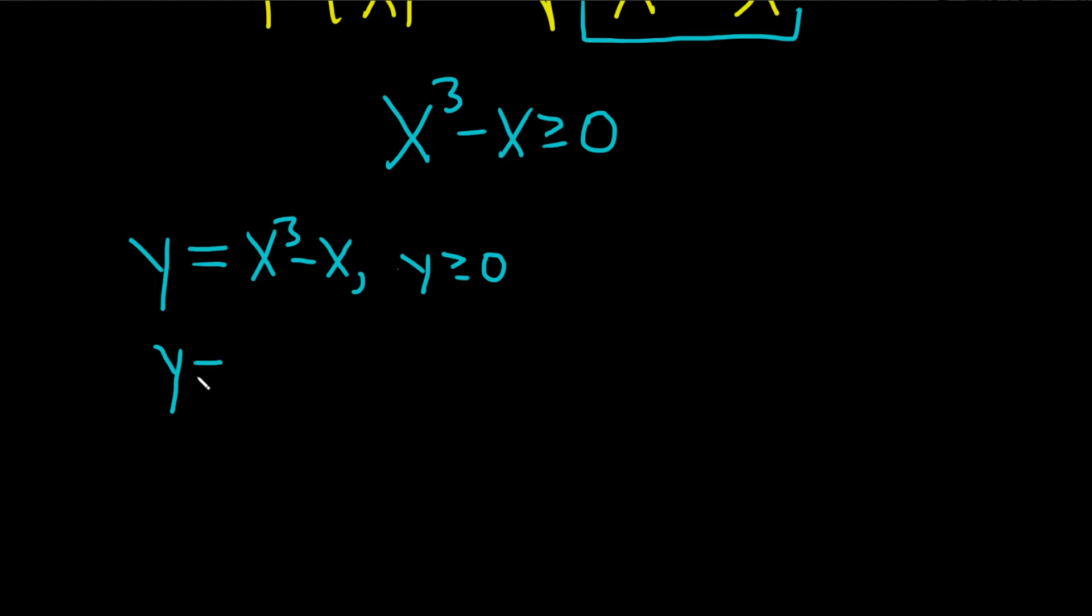Notice you can factor this. You can pull out an x, and it becomes x squared minus 1. And that's the difference of squares. So this is x, x minus 1, x plus 1.